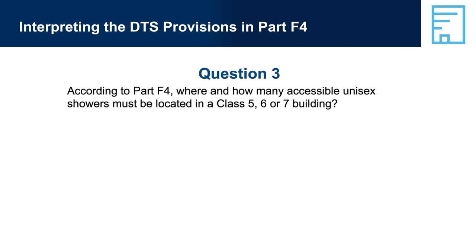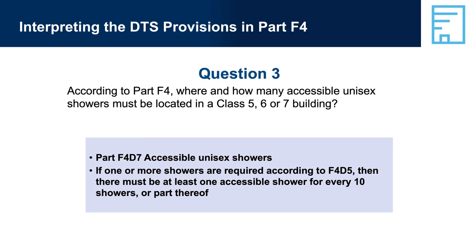Question 3: According to Part F4, where and how many accessible unisex showers must be located in a Class 5, 6 or 7 building? Answer: Part F4D7, Accessible Unisex Showers — if one or more showers are required according to F4D5, then there must be at least one accessible shower for every 10 showers or part thereof. For example: if one shower is required, it must be accessible; if two showers are required, one must be accessible; if 10 showers are required, one must be accessible; if 11–20 showers are required, two must be accessible; if 21–30 showers are required, three must be accessible.